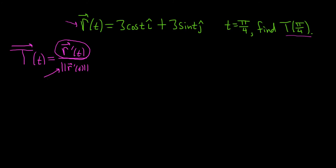This is called normalizing. The process of taking a vector and turning it into a unit vector by dividing by its magnitude is called normalizing. So this is the normalized velocity vector.